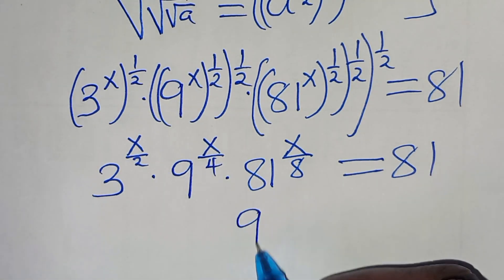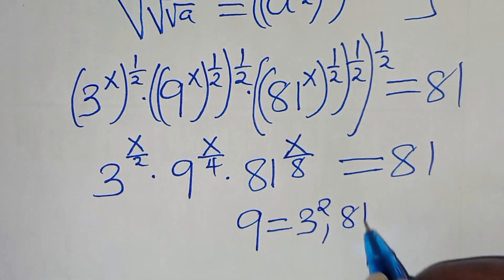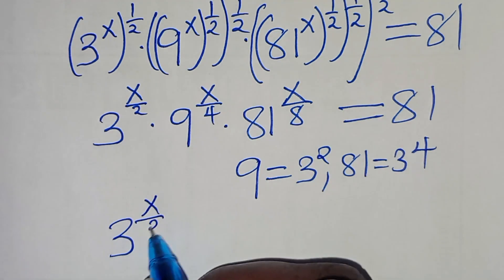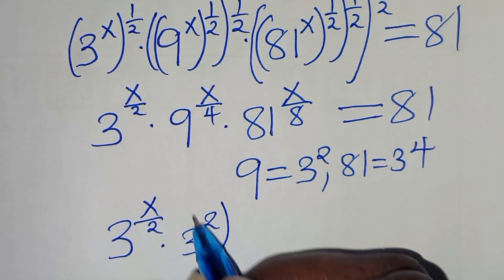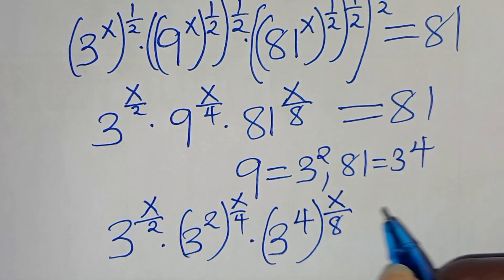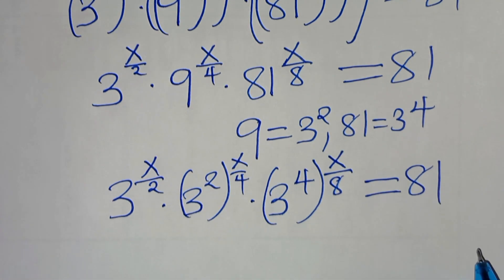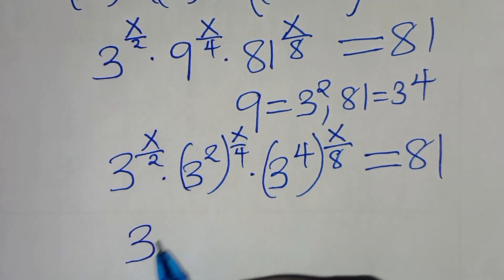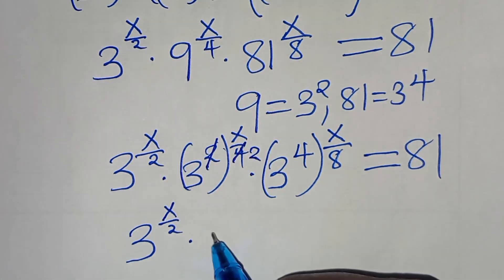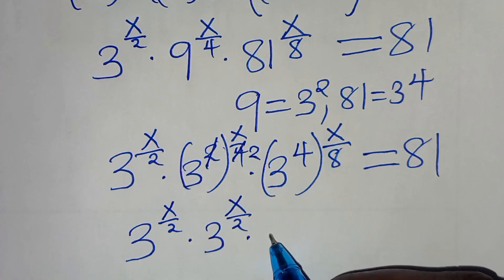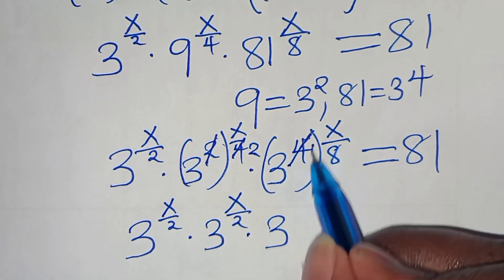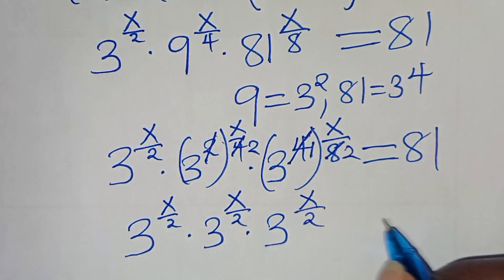The next step is to express 9 as 3 to the power of 2 and 81 as 3 to the power of 4. This implies we have 3 to the power of x over 2, times 3 to the power of 2 raised to the power of x over 4, multiplied by 3 to the power of 4 raised to the power of x over 8, equal to 81. Simplifying: 3 to the power of x over 2, multiplied by 3 to the power of 2x over 4 — simplifying by dividing by 4: 4 over 4 is 1 and 8 over 4 is 2, giving x over 2 — multiplied by 3 to the power of 4x over 8, simplifying to x over 2. This equals 81.